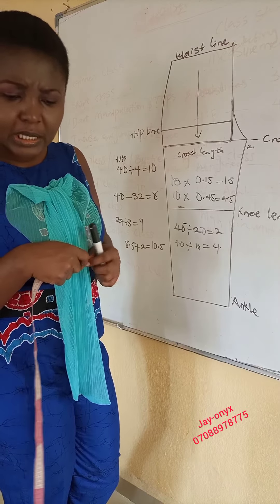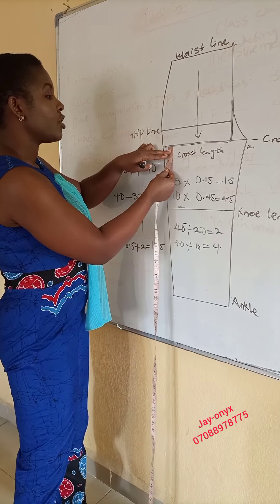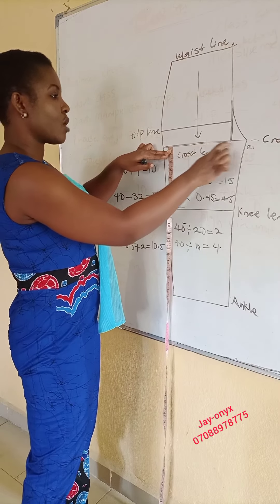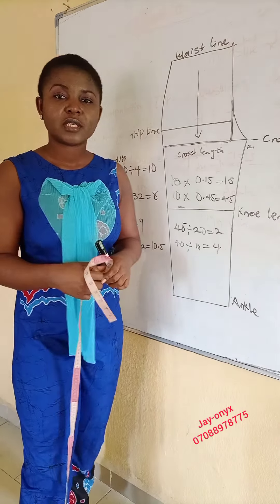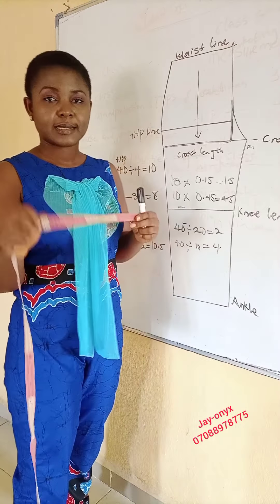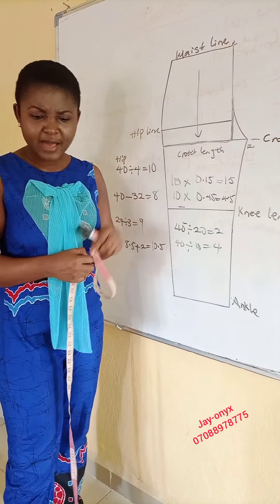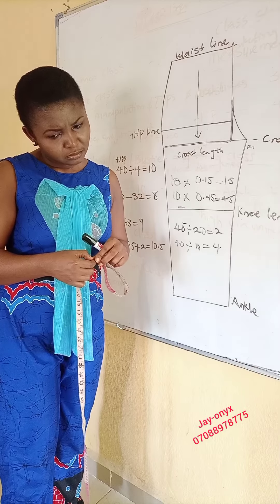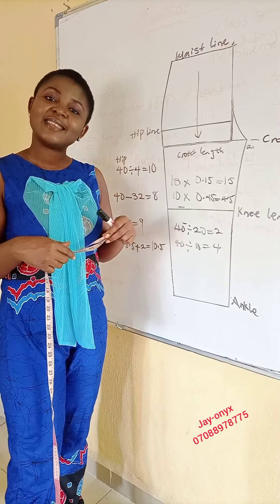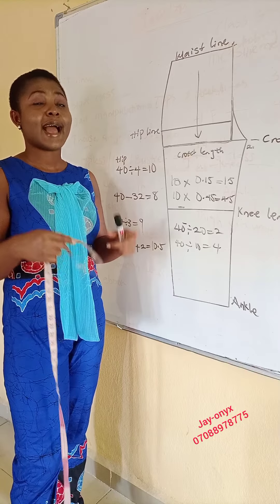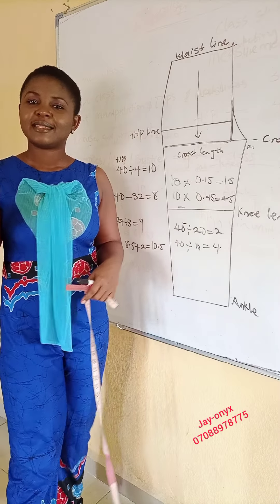Method 3 for knee length: simply measure 12 inches down from your crotch line. Wherever 12 inches stops, that becomes your knee length position. These are the three methods you can use to find your knee length.